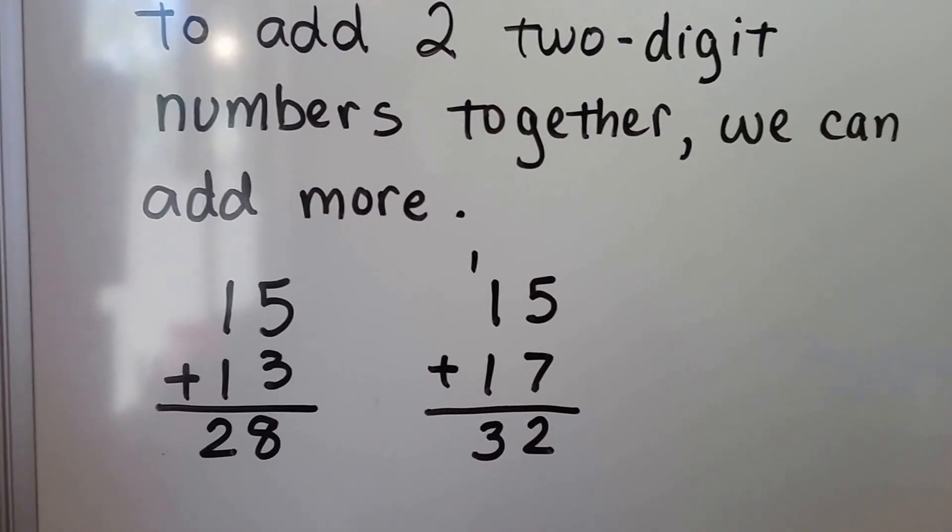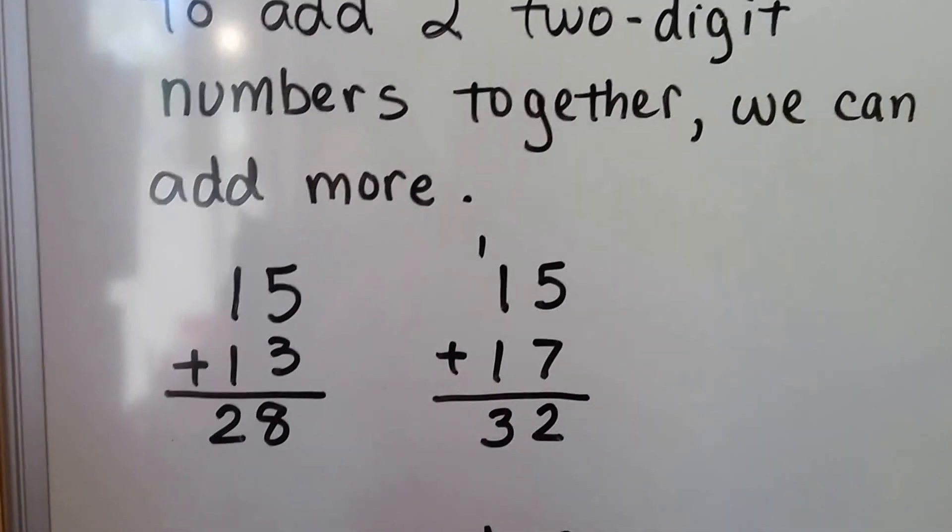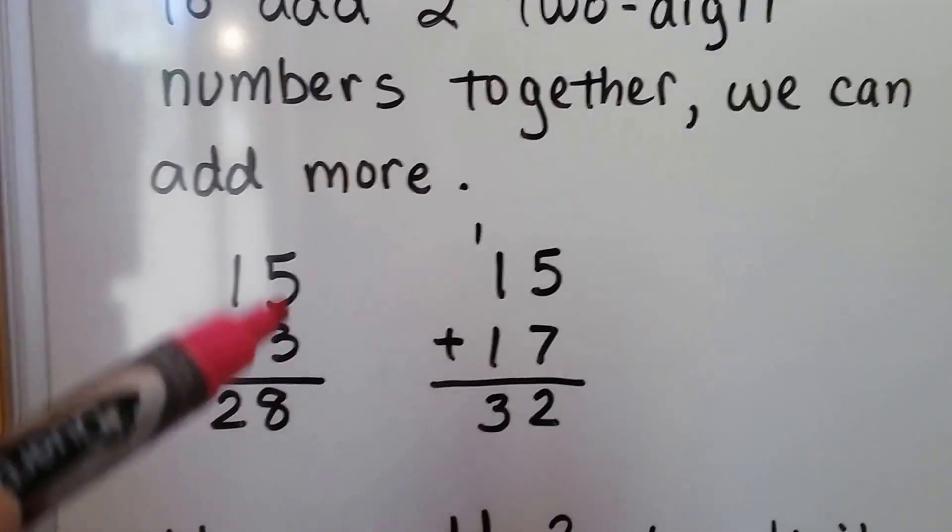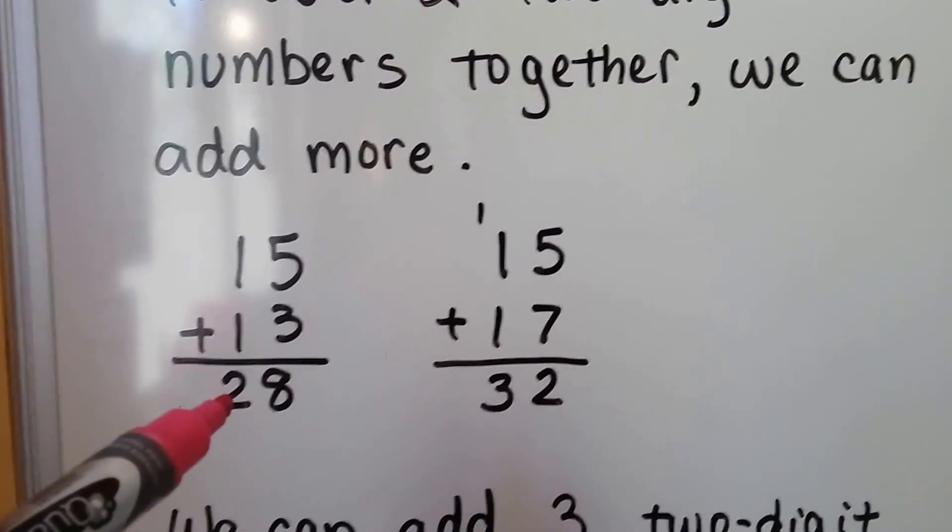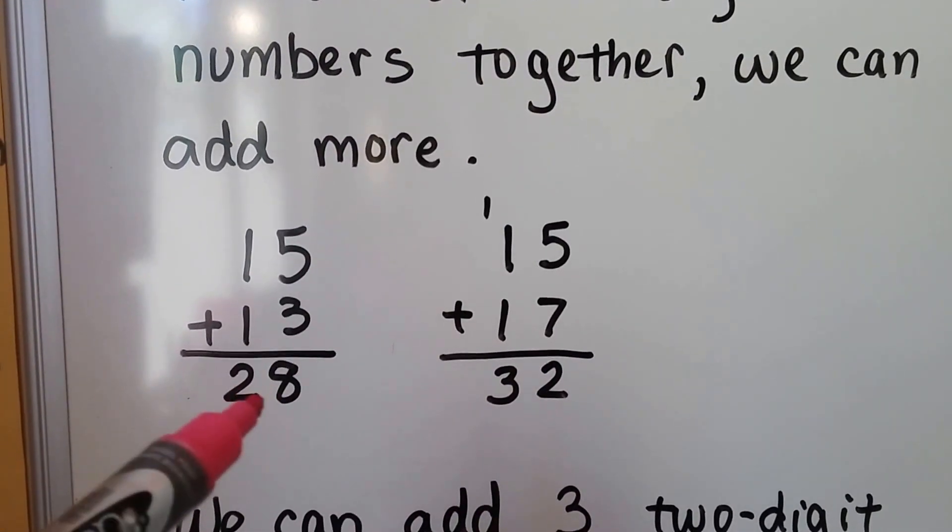We know that we can stack them on top of each other like this. To add 15 plus 13, we just add the ones column. 5 plus 3 is 8, and then we add the tens column. It's 2. It's 28.